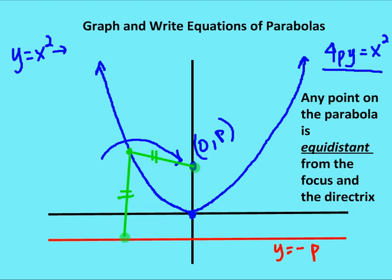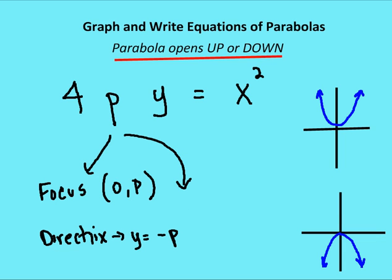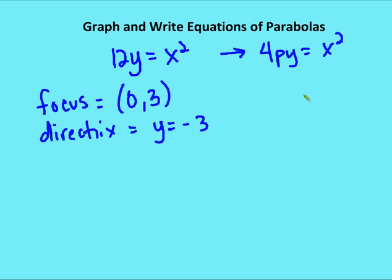If we have a parabola that opens up or down, the y variable has the exponent of one and x has the exponent of two. The focus is at (0, p) and the directrix is y equals negative p. For example, if I have 12y equals x squared and I put it into the form 4py equals x squared, I find p equals 3. So my focus is at (0, 3) and my directrix is y equals negative 3.